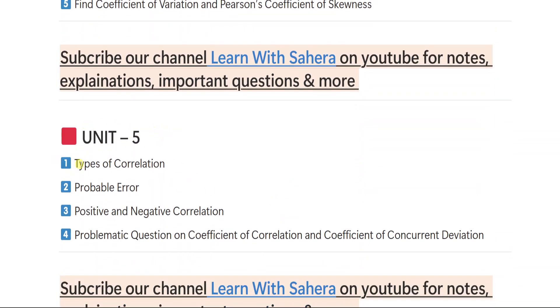From unit number 5, first important question is types of correlation. Second is probable error. Three is positive and negative correlation. Fourth is problematic question on coefficient of correlation and coefficient of concurrent deviation. So these are the four important questions from unit number 5.